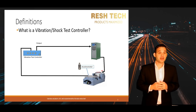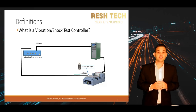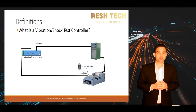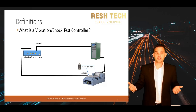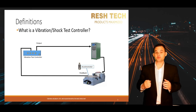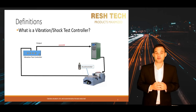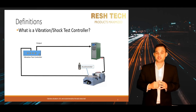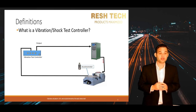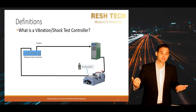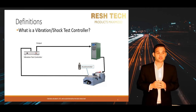Here we see a vibration and shock test controller, an amplifier, a vibration test system, and an accelerometer. The signal is outputted from the vibration test controller based on your profile. The amplifier amplifies the signal and the vibration test system produces a mechanical output based on the electrical input signal, just like your stereo system.